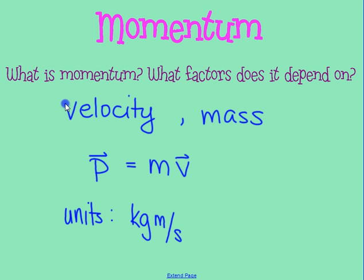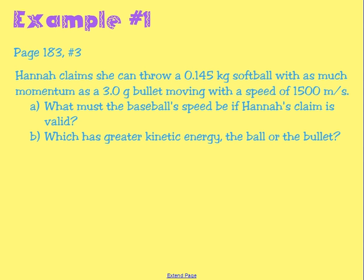Let's look at a problem using this equation. Hannah claims she can throw a 0.145-kilogram softball with as much momentum as a 3-gram bullet moving at 1,500 meters per second. The question asks: what must the softball's speed be if Hannah's claim is valid? To determine that, we need to figure out how much momentum the bullet has.